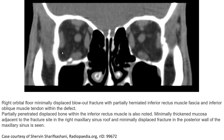Another case — this one is, to me, very subtle. Sometimes it is hard to see the fracture. As you see in the image, it shows the right orbital floor minimally displaced blowout fracture with partially herniated inferior rectus muscle fascia and inferior oblique muscle tendon within the defect, partially penetrating through the ethmoid bone, with the inferior rectus muscle entrapment also noted.